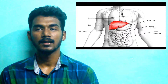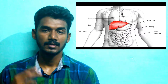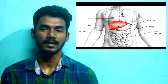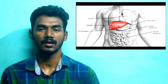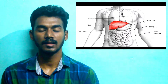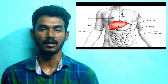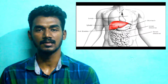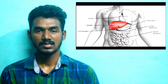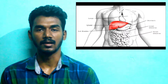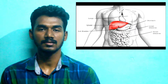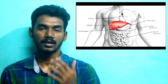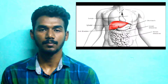The liver is the largest gland. It is the second largest organ overall. The skin is the largest organ. The second largest organ is the liver, and among the internal organs, the liver is the largest.